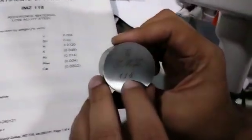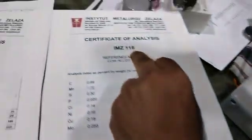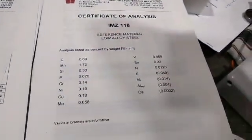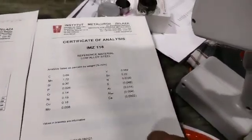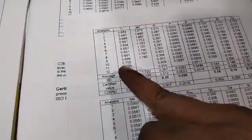Here is a sample you can see. This is 118 IMZ and you see IMZ 118, you can see all the readings. Carbon is here 0.69 and the variation in carbon is 0.68271.